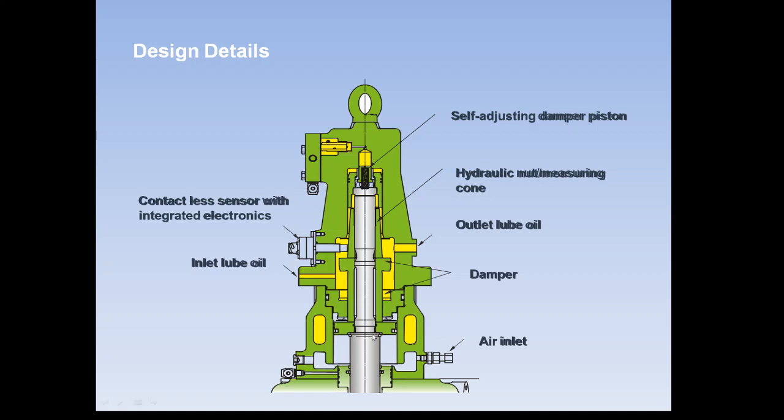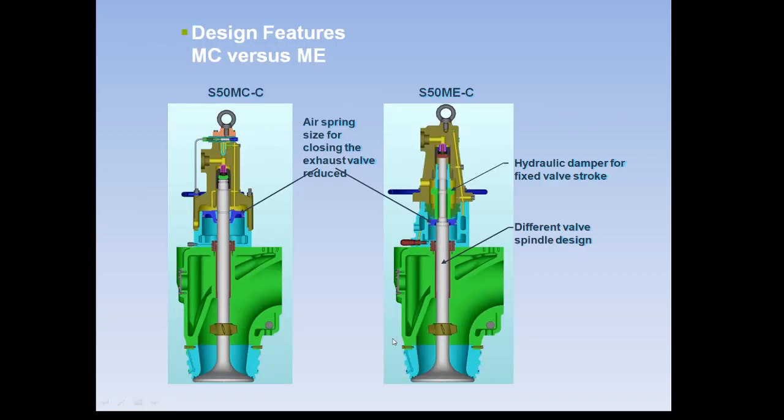Therefore, as you can see, the air spring size for closing the exhaust valve has been reduced. Basically, in the old cam-type operated exhaust valve, the air spring was provided with a bigger piston, but in the ME series the air spring piston is smaller.